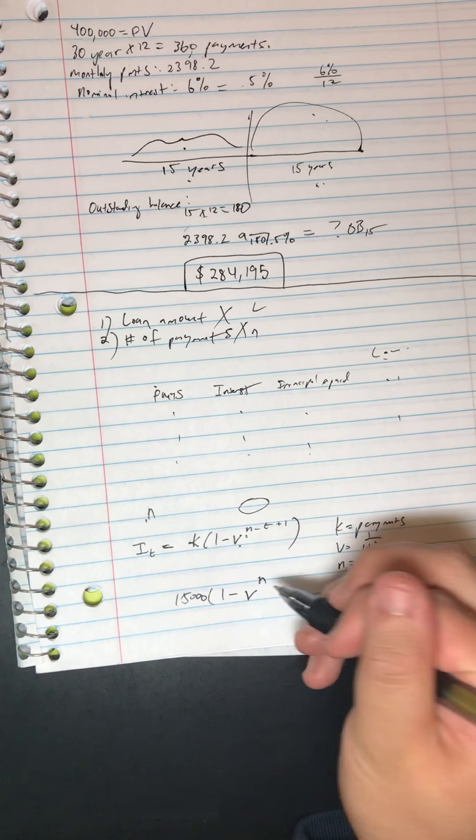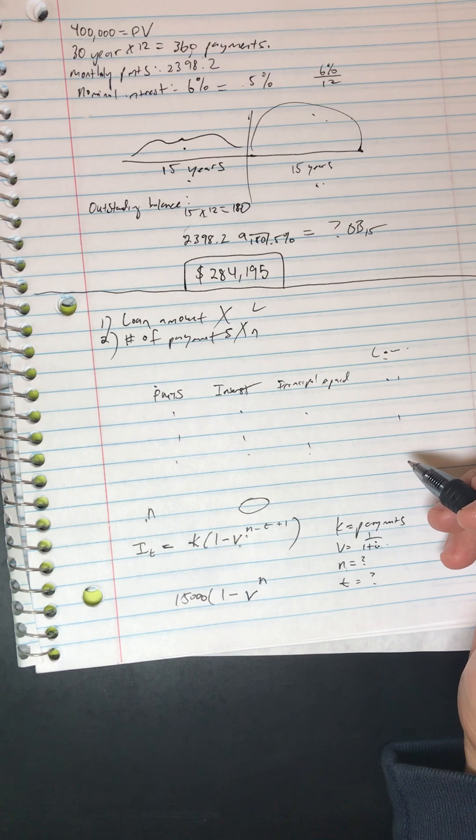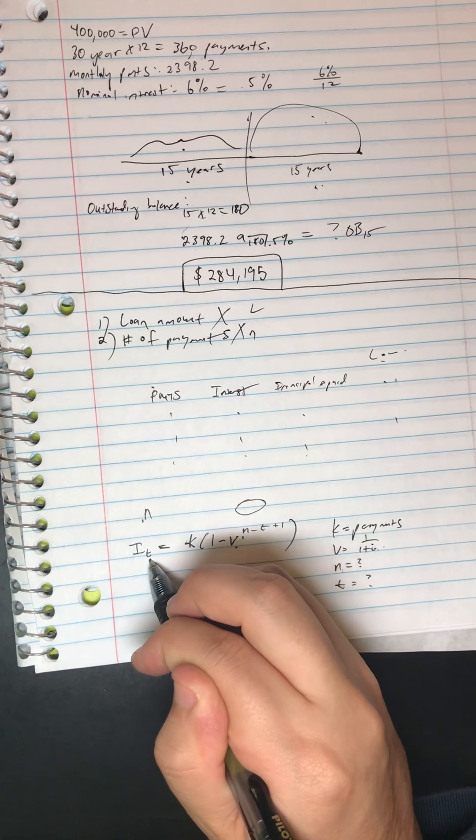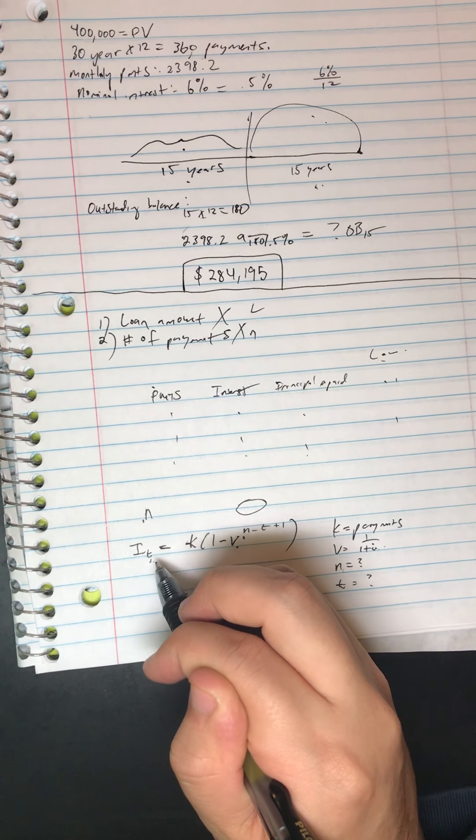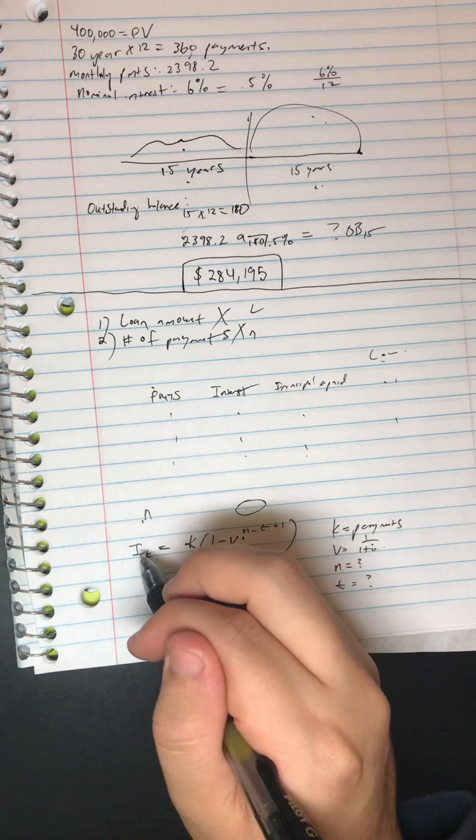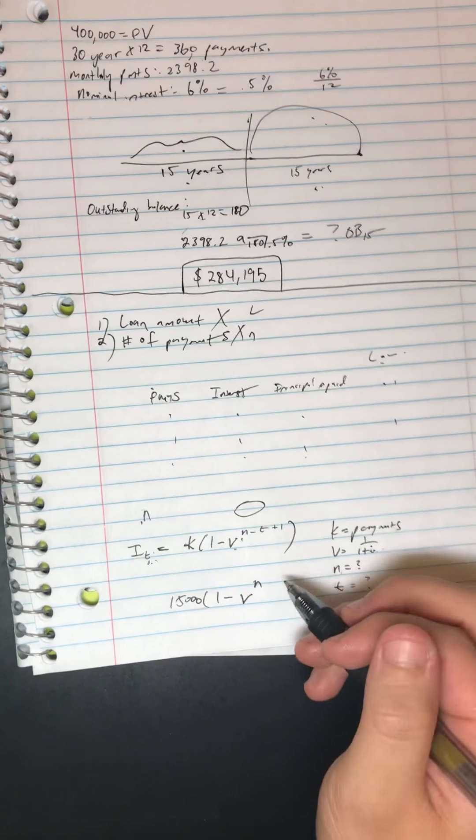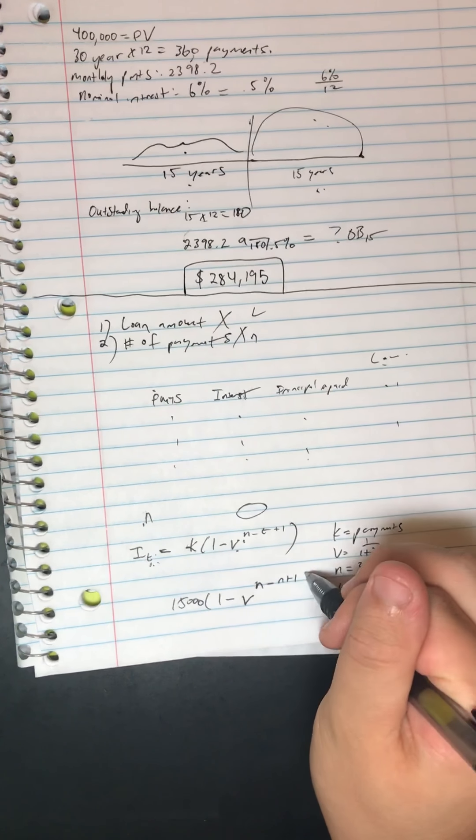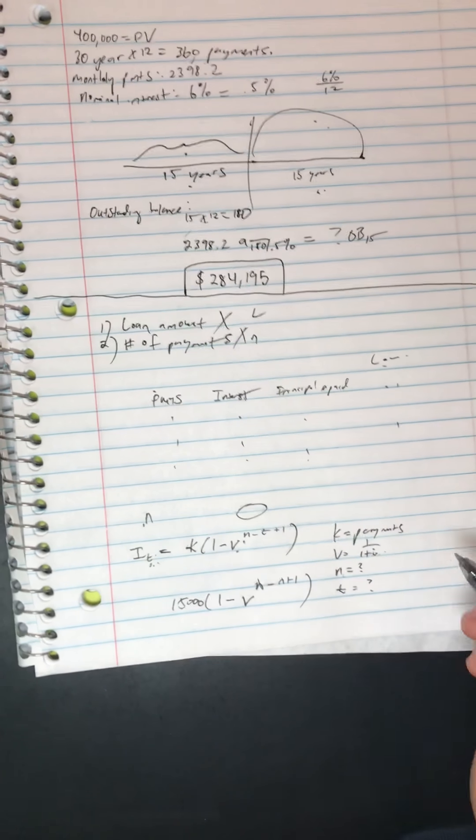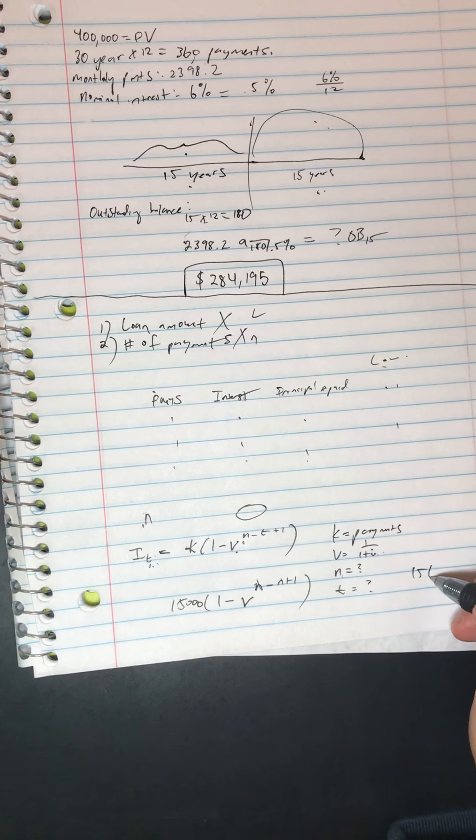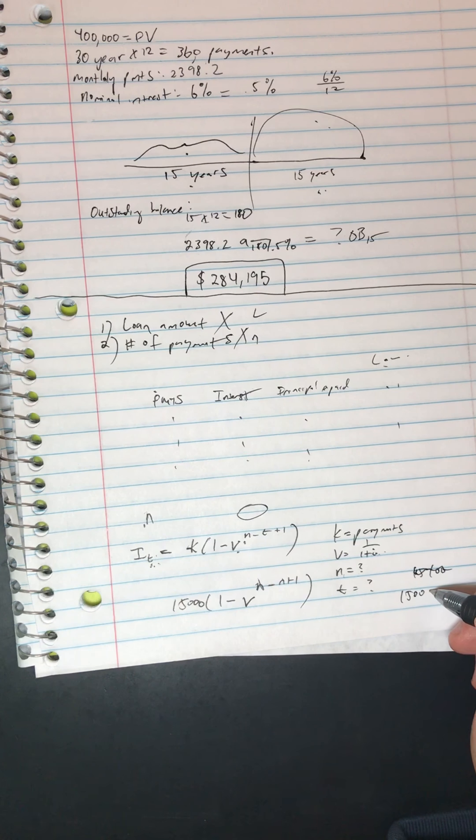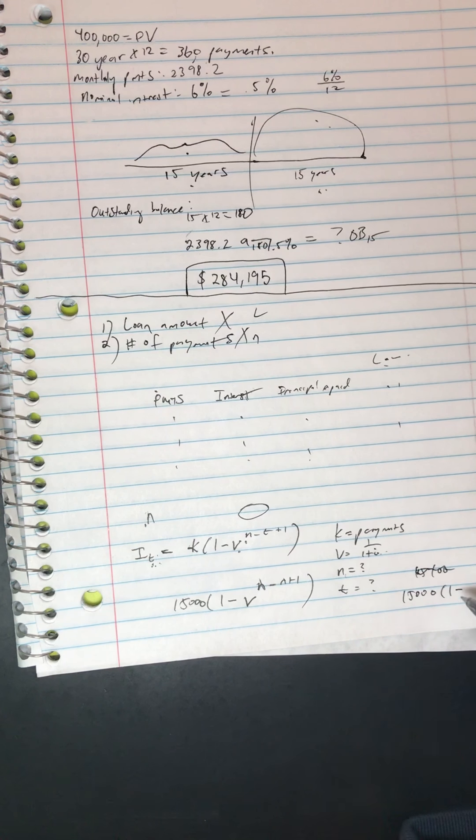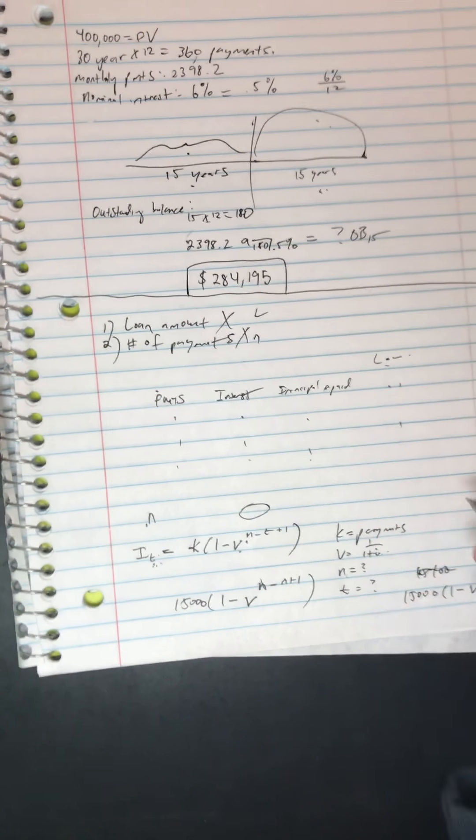So we have $15,000 payment times 1 minus v to the n minus t plus 1, and we want to find t for the final payment. The final payment is n, so t equals n. n minus n plus 1, so when you cancel these out we get $15,000 times 1 minus v to the 1.